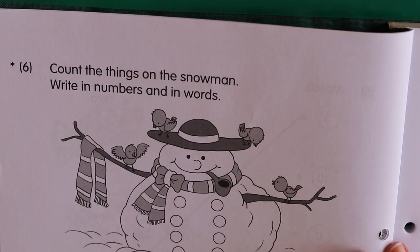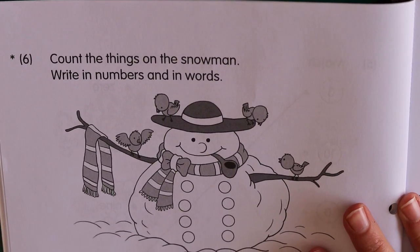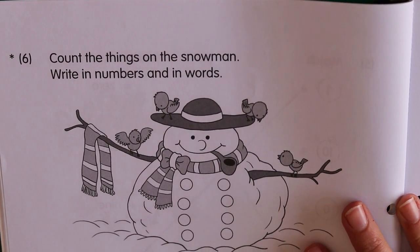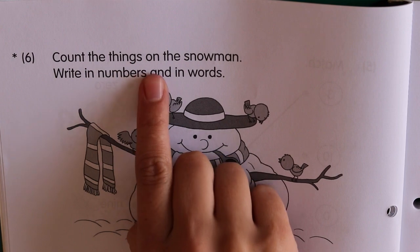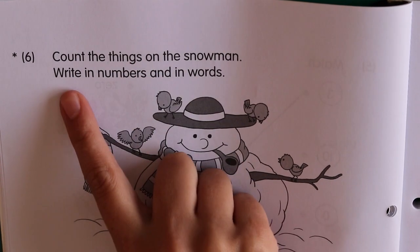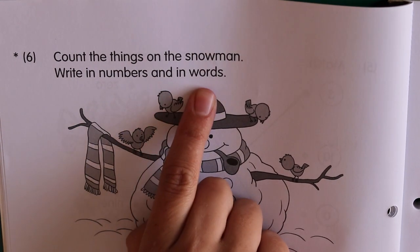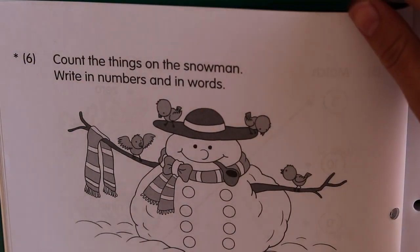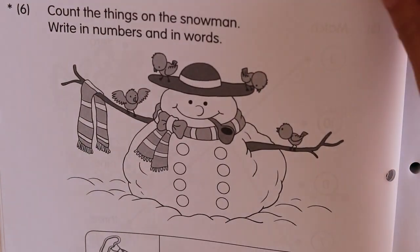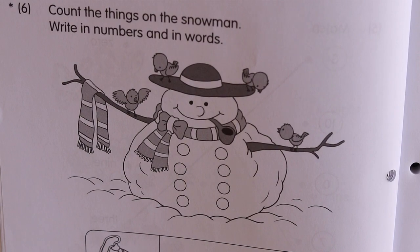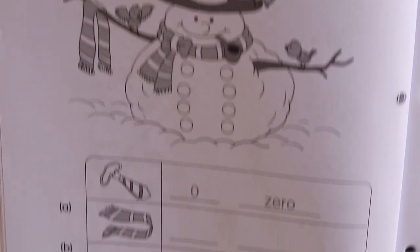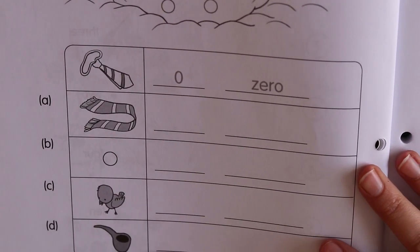Page six is the last one for today. It starts with a snowman. It says, count the things on the snowman. Write in numbers and in words. So there's our snowman picture. He's got all sorts of objects on him. And at the bottom, we have to count.